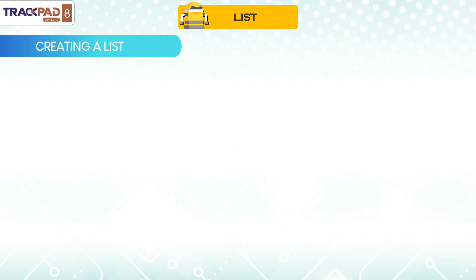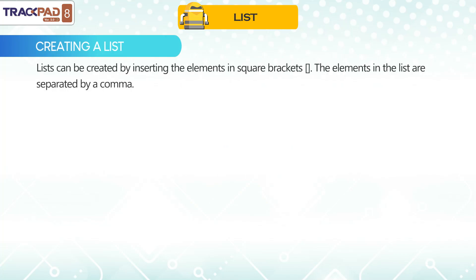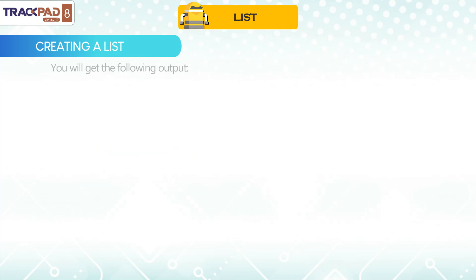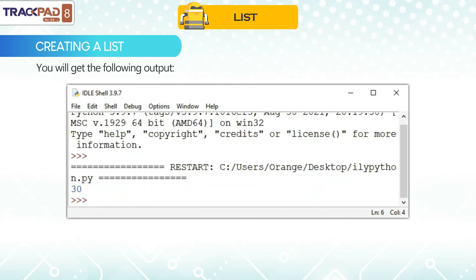Creating a List. Lists can be created by inserting the elements in square brackets. The elements in the list are separated by a comma. Program 11: To create a list, you will get the following output.